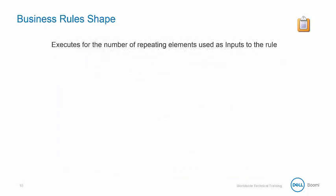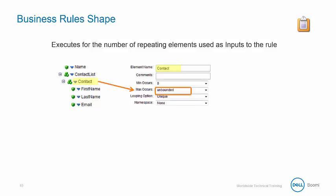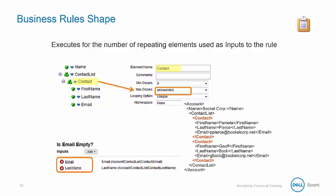If a repeating profile element is used as an input, the business rules shape executes its rules for each repetition of that element. For example, in this XML profile, notice the repeating contact element, which is reflected by the maximum occurs being set to unbounded in the data elements tab. Let's assume we are evaluating both the email and the last name fields, both of which are child elements of the looping contact parent element.